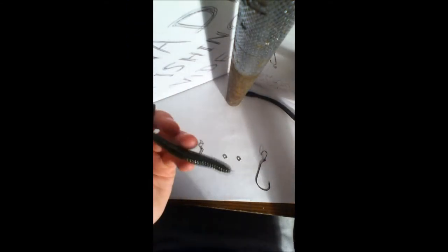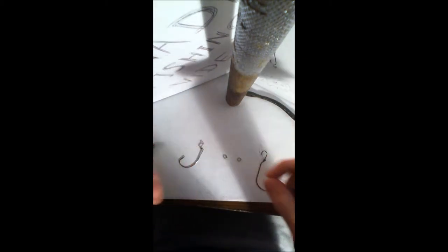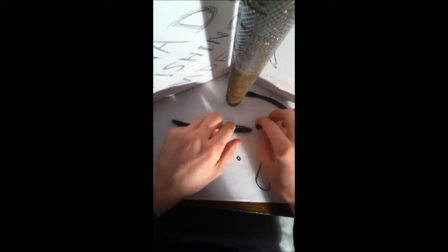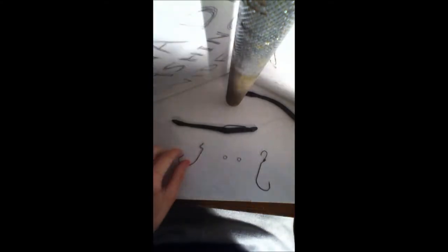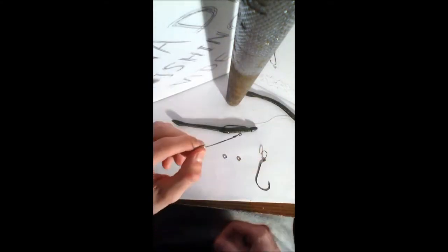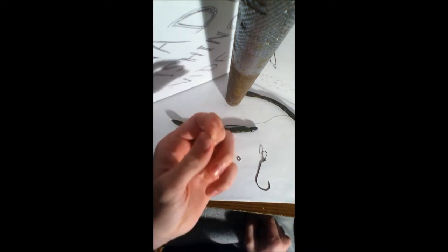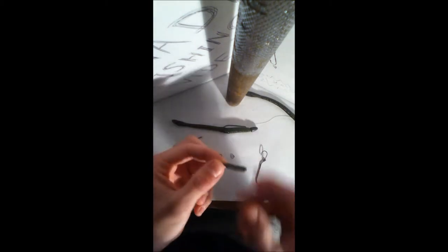So here on the table in front of me is a regular Texas Rig: bullet weight, line, that's tied to a worm hook with a soft plastic worm on it. I'm going to keep this here so you can see the different changes that I've made in my rig that differ from this regular one. So first off you need three things. You need your Texas Rig hook, I usually like to use four rod hooks because they're big enough that I can fit the split ring through. And the second thing you need are the split rings, you need two of them. And the third thing you need is a drop shot pencil weight, like this one.